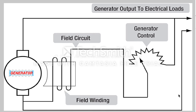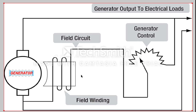My name is Michael Crawley and I'm going to be describing the operation of a DC generator circuit. In the diagram you can see the generator, the field coil or the field winding, and a generator control which is a variable resistor.